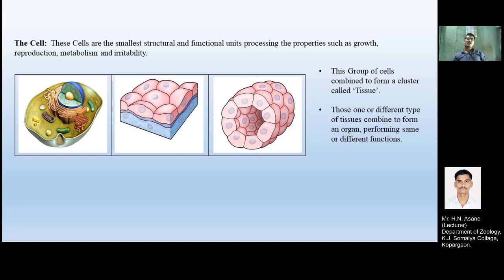All life is started with a single cell. Cells are the smallest structural and functional unit, possessing properties such as growth, reproduction, metabolism, and irritability. These cells combine to form tissue. Tissue groups together to form an organ, organs form together to form a system, and various systems make our body.